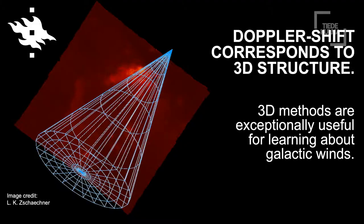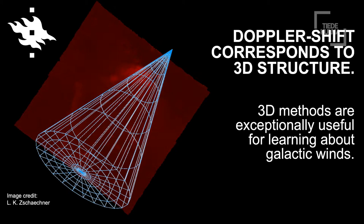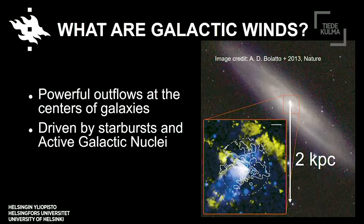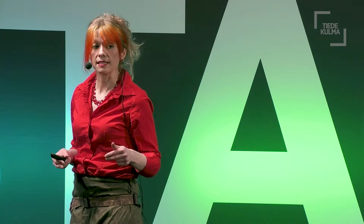3D methods are exceptionally useful for studying galactic winds, because they are essentially three-dimensional cones and the 3D methods give us a good sense of their geometries and how they're moving. So what are galactic winds? These are very powerful outflows from the centers of galaxies. You can see a very well-known galactic wind in NGC 253, a nearby galaxy, and we concentrate at the very center within the innermost two kiloparsecs — about 1600 times the distance between our Sun and its nearest neighboring star. Galactic winds are generally driven by starburst activity as well as active galactic nuclei.